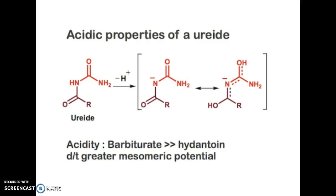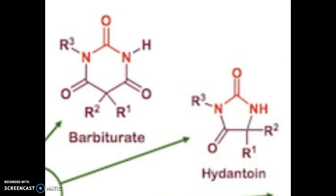Hello everyone, today I'm going to explain to you the acidic properties of barbiturates and hydantoin. From here, we can see that barbiturate is more acidic than hydantoin due to greater mesomeric potential. Let's look at the structure of barbiturate and hydantoin.